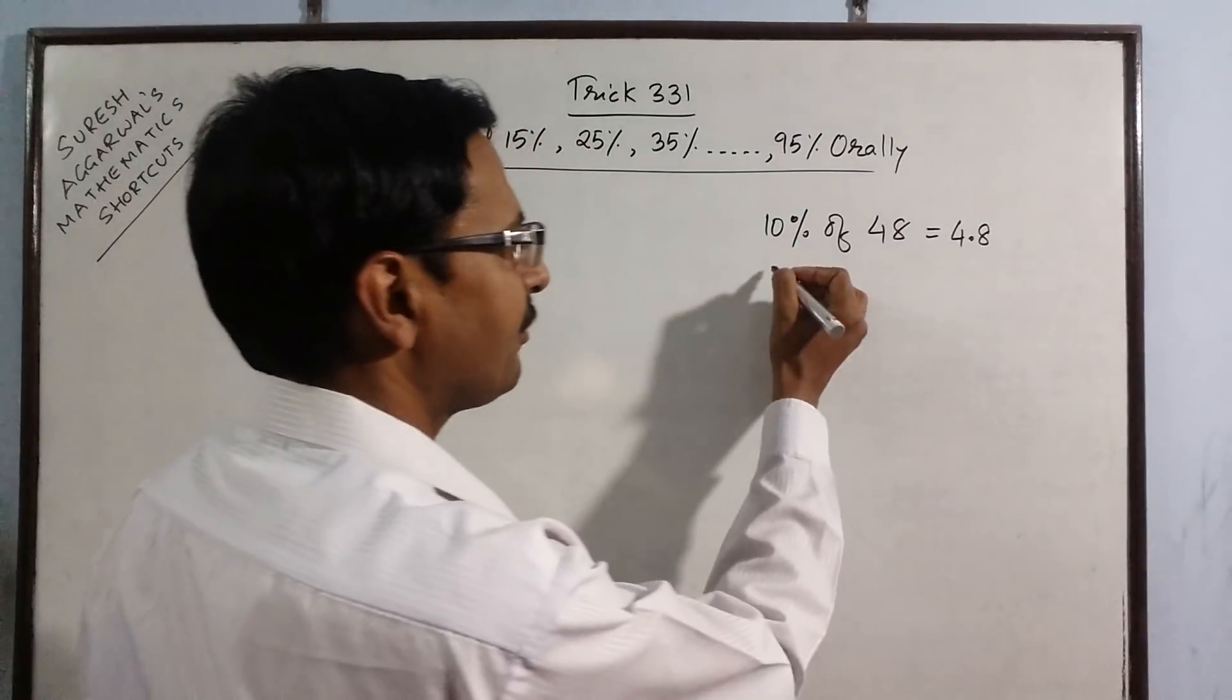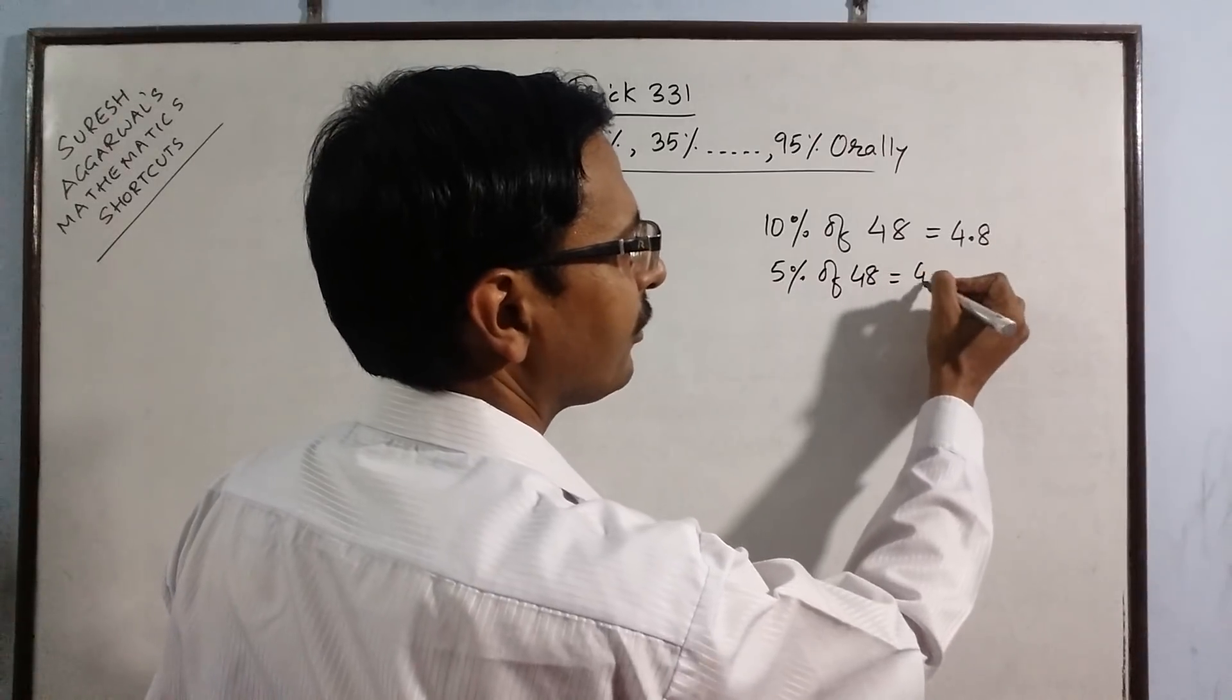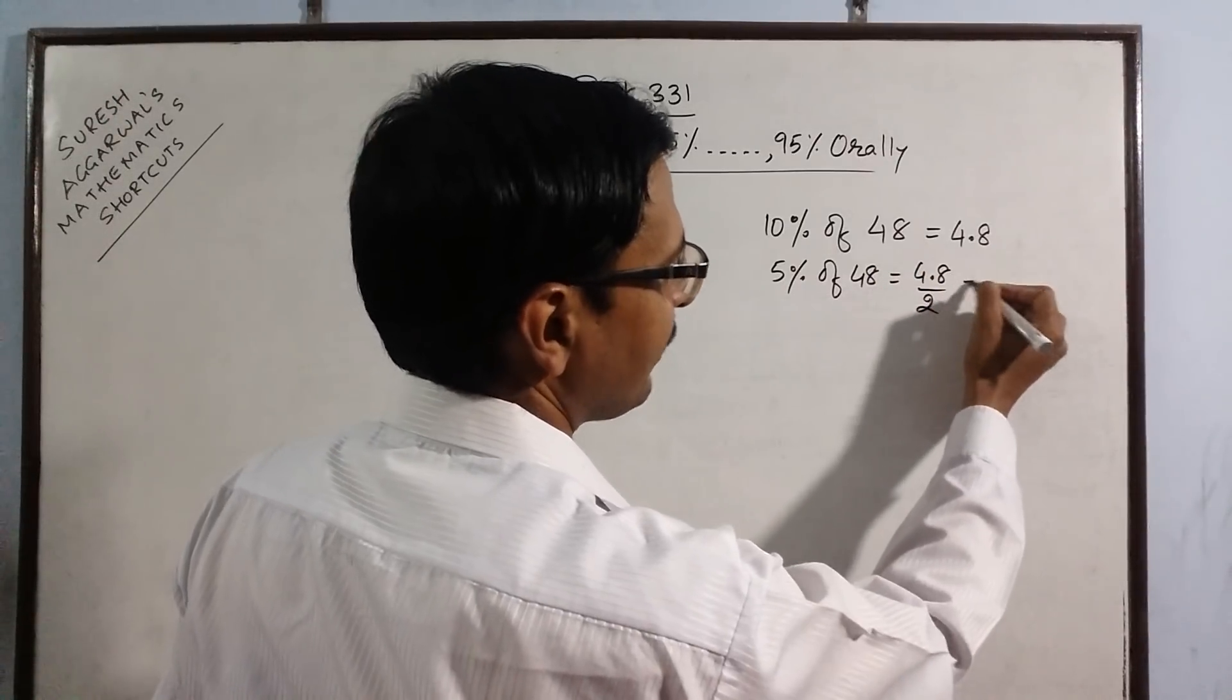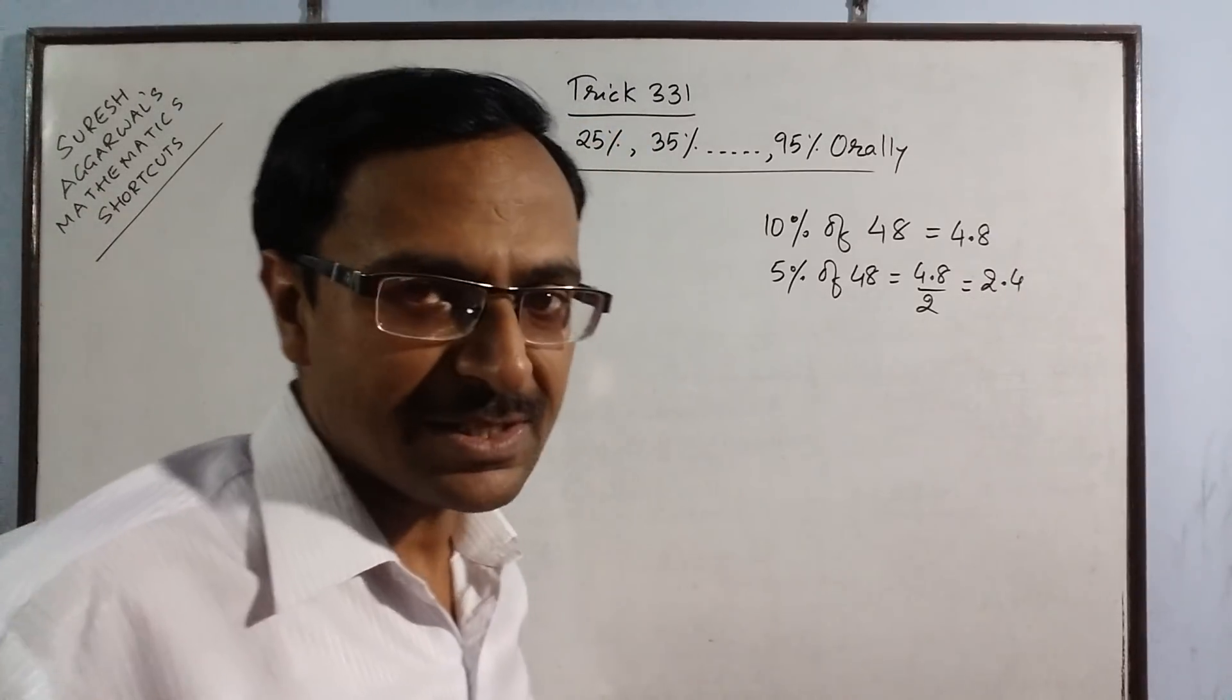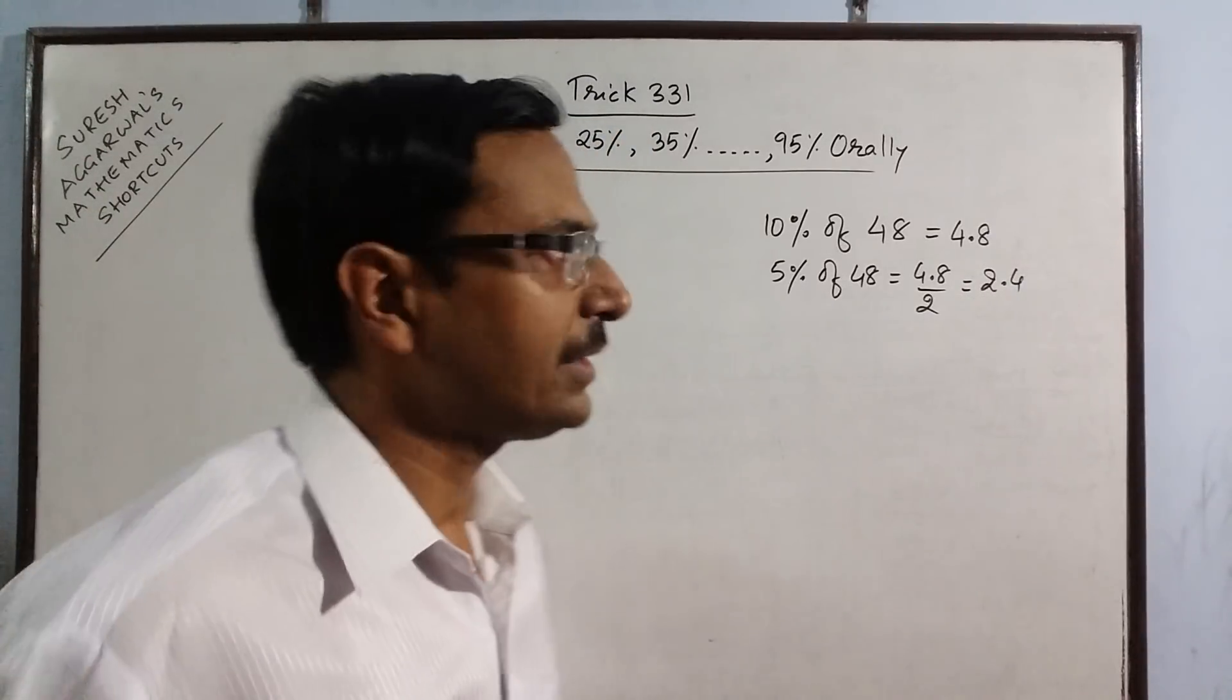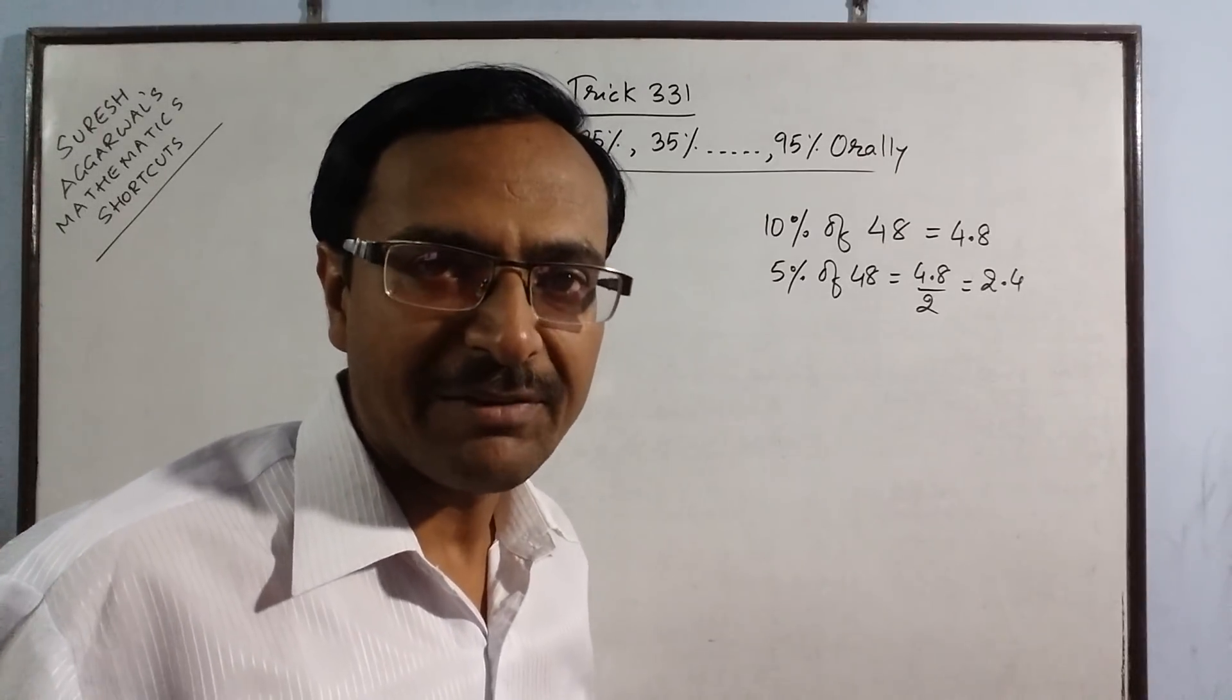So what is 5%? 5% of 48 will be half of 4.8. So divided by 2, 2.4 is the 5%. That's it. If you know this much, 15%, 25%, all these percentages will be very easy for you.